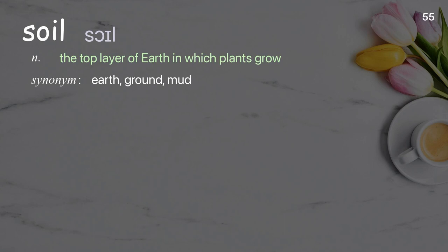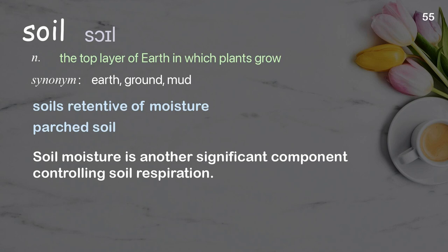Soil: the top layer of earth in which plants grow. Examples: soils retentive of moisture, parched soil. Soil moisture is another significant component controlling soil respiration.